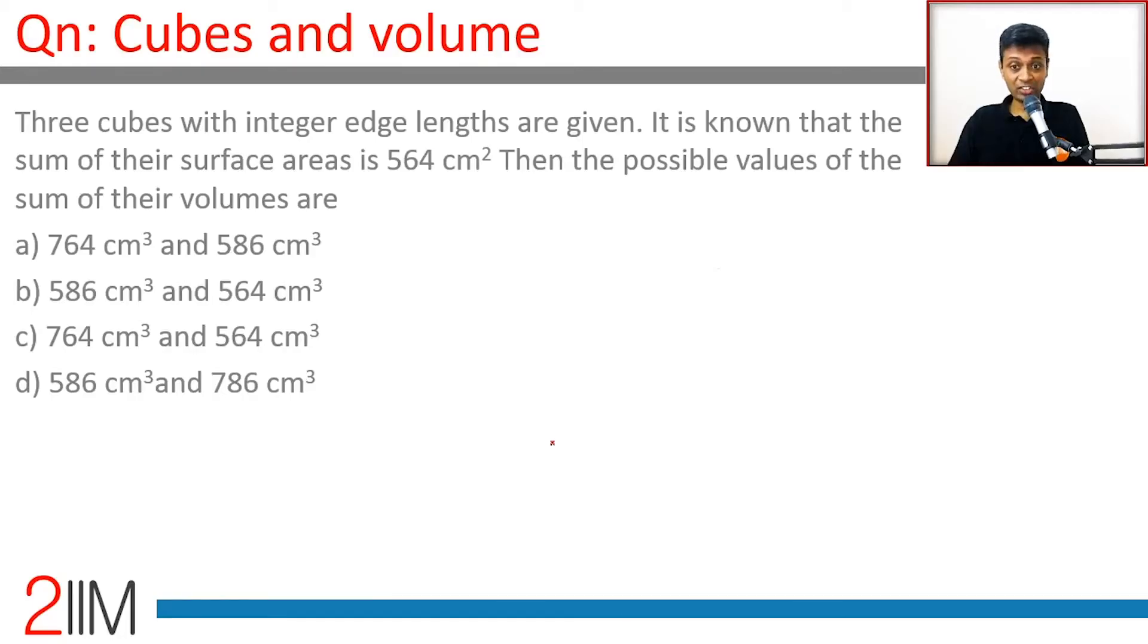Three cubes with integer edge lengths are given. It is known that the sum of their surface areas is 564 centimeter square. So three cubes all with integer sides. Let's assume this area would be 6a square, 6b square, 6c square. Let the integers be a, b, and c.